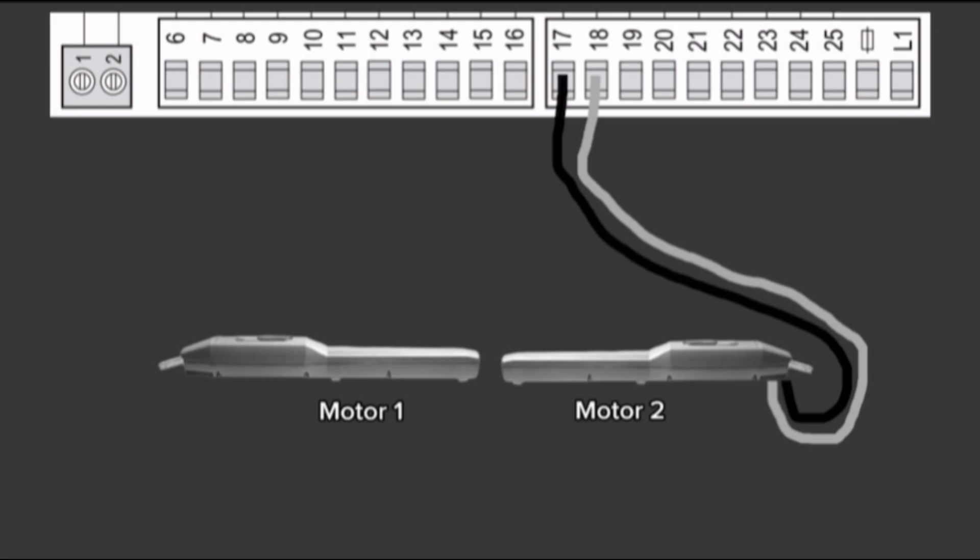The Motor 2 Second Phase Wire directly goes to Terminal 19. Terminal 19 is Motor 2 Close Brown Wire.